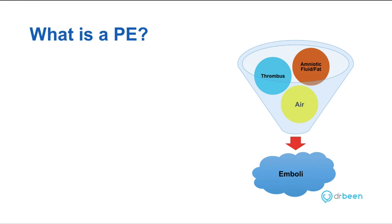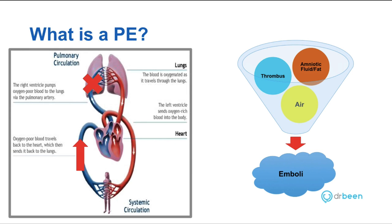Let's start by talking about what pulmonary emboli are and what substances form them. Most of the time when we talk about pulmonary emboli, we're thinking about thrombus or blood clot. But pulmonary emboli can also result from amniotic fluid and fat. Air can also embolize, lodging in the pulmonary circulation. Any of these substances will essentially start in the lower circulation, travel through the venous system, through the right side of the heart, and into the pulmonary circulation.